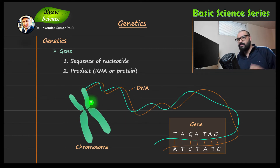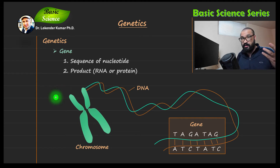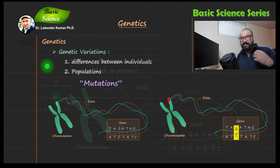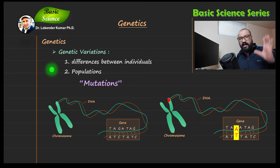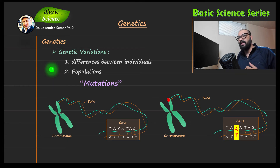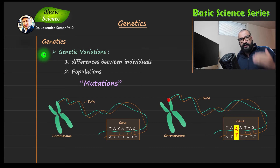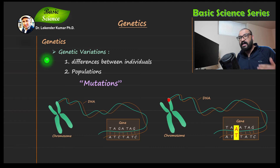That protein carries out a specific function or carries a specific trait. This is the concept of gene. Animals, plants, microbes — all of them have a lot of genes, and all those genes are responsible for a specific trait or a specific protein. Now let's move to genetic variation. We all know that there is so much variation among different individuals, even though they have the same set of genes — for example, differences in eye color and skin color.